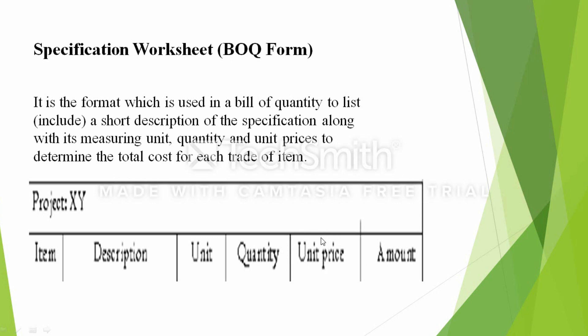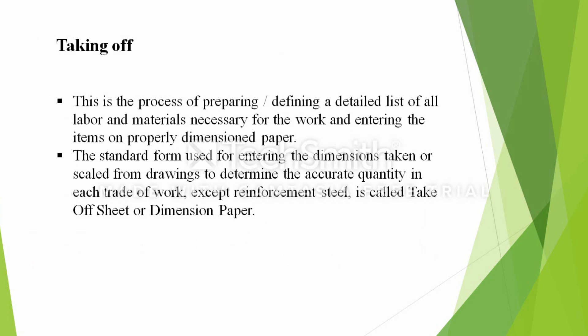This is a price per meter cube. In this example, the excavation is 1.3 per meter cube. At the beginning, the amount equals unit price times quantity. The result is 1.2. So the bill of quantity will describe the format.